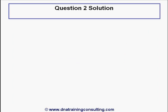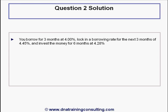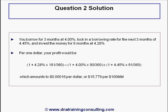Solution to Question 2. You borrow for three months at the offer rate of 4%, lock in a borrowing rate for the next three months also at the offer rate of 4.45%, and invest the money for six months at the bid rate of 4.28%. Per one dollar, your profit would be 0.0000016, or relative to a notional of $100 million, $15,779. The correct answer is A.